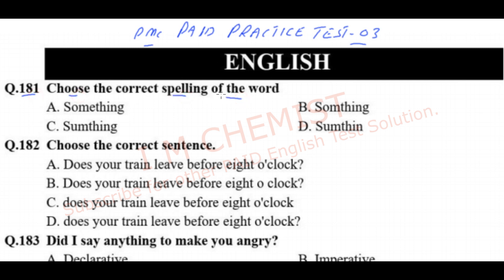Question number 181: choose the correct spelling of the word. The correct spelling of 'something' is option A. We always write 'some' and 'thing' together — there is no space between them.